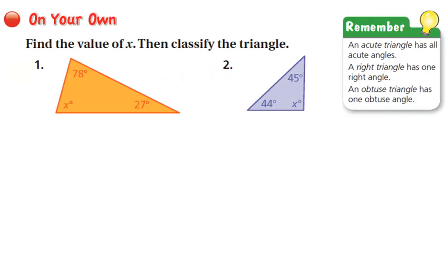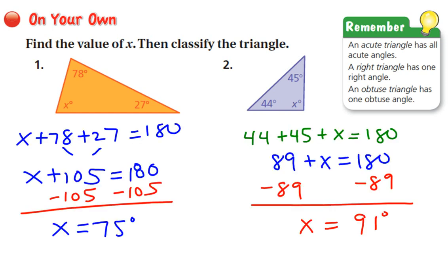All right, you think you're getting the hang of it? Why don't you try adding up these three angles, writing the algebraic sentence, and seeing if you can find your answer. Pause the video, and then turn it back on to check. The answer for number one is that the missing angle is 75 degrees. And with all of the angles being lower than 90, this is an acute triangle.